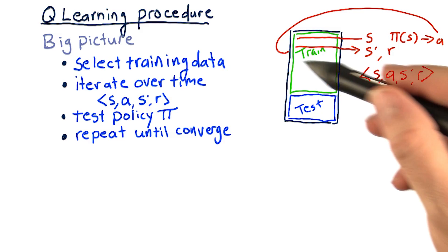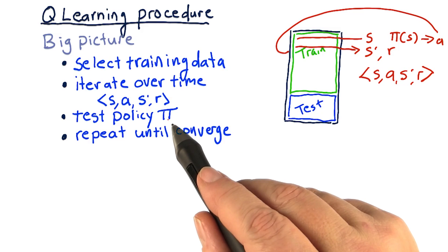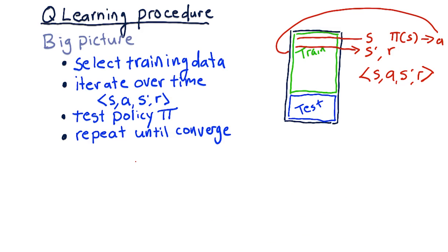Once we get all the way through the training data, we test our policy. And we see how well it performs in a back test. If it's converged, or it's not getting any better, then we say we're done. If not, we repeat this whole process all the way through the training data.